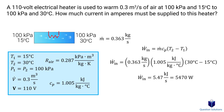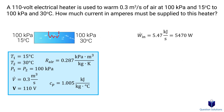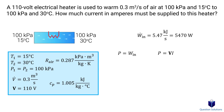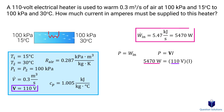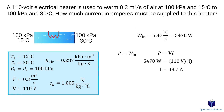We get 5.47 kilojoules per second, or 5470 watts. To figure out the current of the heater, we use: power equals current times voltage. The work input is our power, we have the voltage, and we solve for the current — that gives us the current applied to the heater.